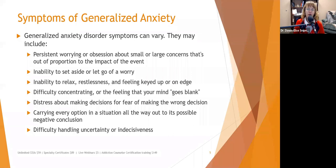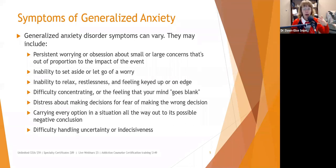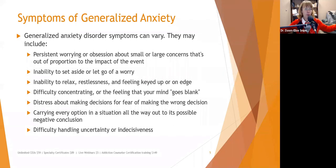Difficulty handling uncertainty or indecisiveness is also common. When we feel anxious, that fight-or-flee instinct kicks in and we want to control as much as we can. If we don't know what's going to happen next, we feel on edge. Helping people develop distress tolerance skills is really helpful here, because life is sometimes just uncertain — like a cancer patient waiting three months through chemotherapy before having another MRI to see if treatment is working.